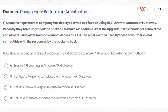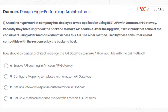An online hypermarket company has deployed a web application using REST API with Amazon API Gateway. Recently they have upgraded the backend to make the API scalable. After the upgrade, it was found that some of the consumers using older methods cannot access this API.